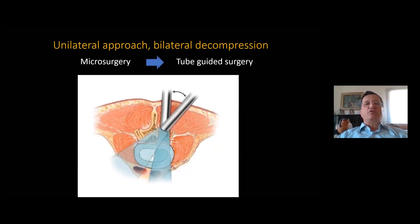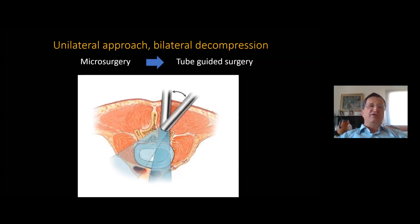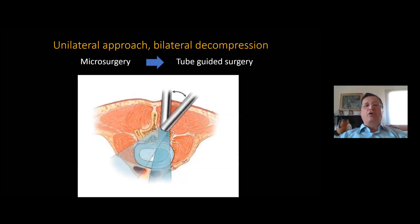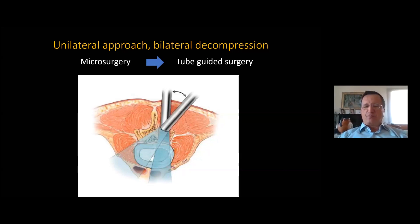How can we do that? Unilateral approach and bilateral decompression. You can either use a hemi-laminectomy retractor with microsurgical technique, or you can use tubes — tube-guided surgery. Very few of us are also using an interlaminar endoscope to perform those decompressions.